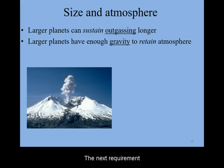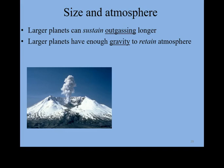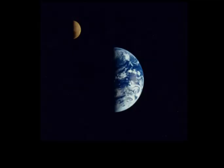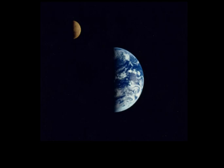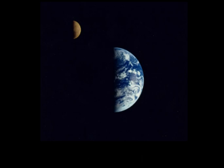The next requirement is a substantial gravitational field to hold on to the atmosphere. Because the Earth is much more massive than the Moon, it has greater gravity and hence can hold on to moderately light gases such as nitrogen and oxygen much easier.